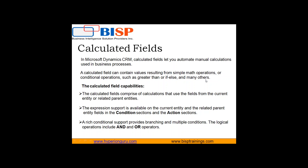Now what are the capabilities of a calculated field? The calculated field uses fields from the current entity or the related parent entity. Expression support is available on the current entity and the related parent entity fields in both the condition section and the action section. Rich conditional support provides branching and multiple conditions. The logical operations include AND and OR operators, and we can get values from the current entity as well as from the related parent entity field.